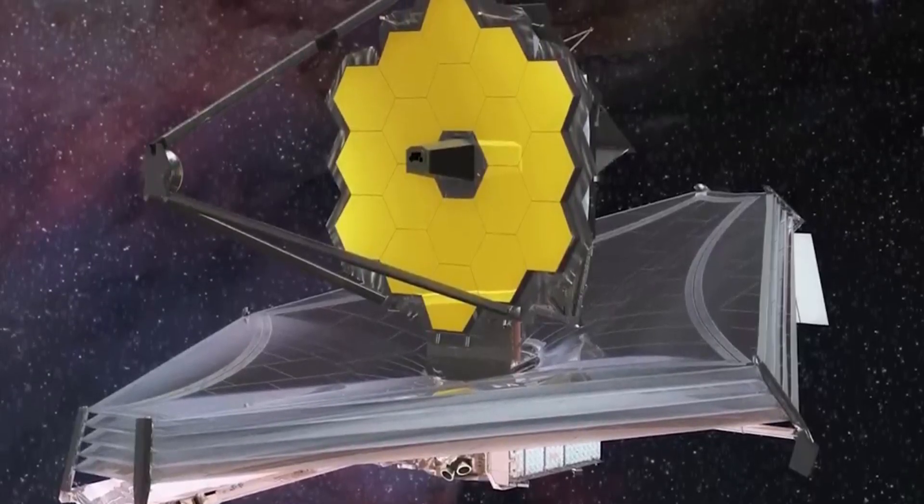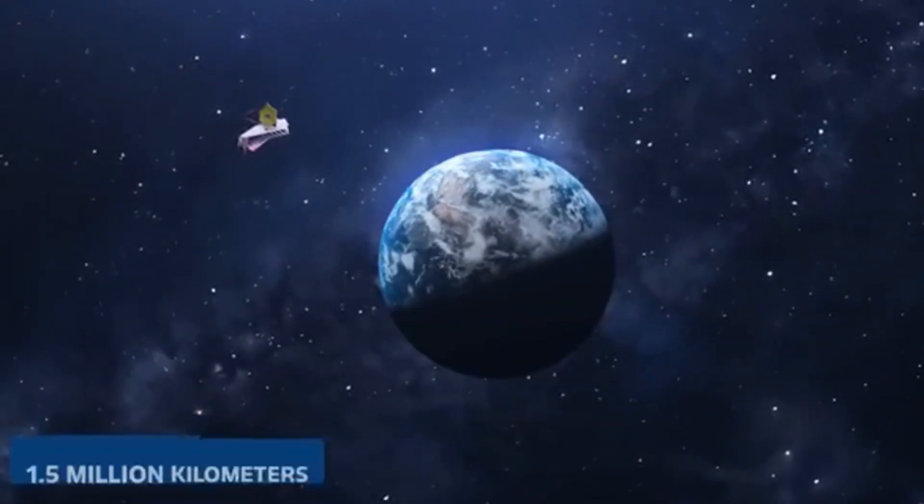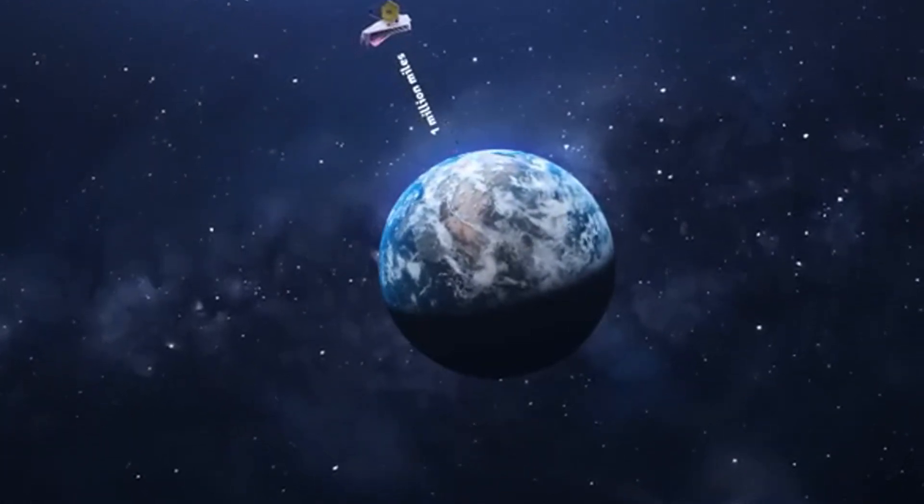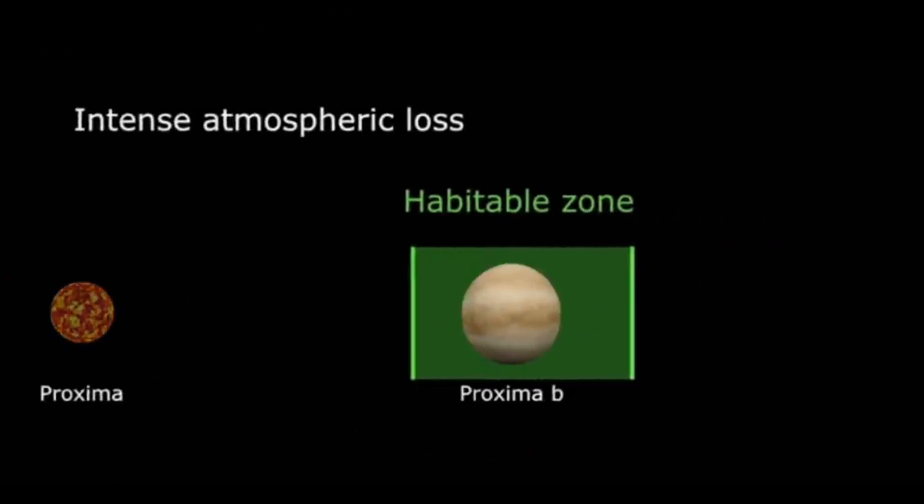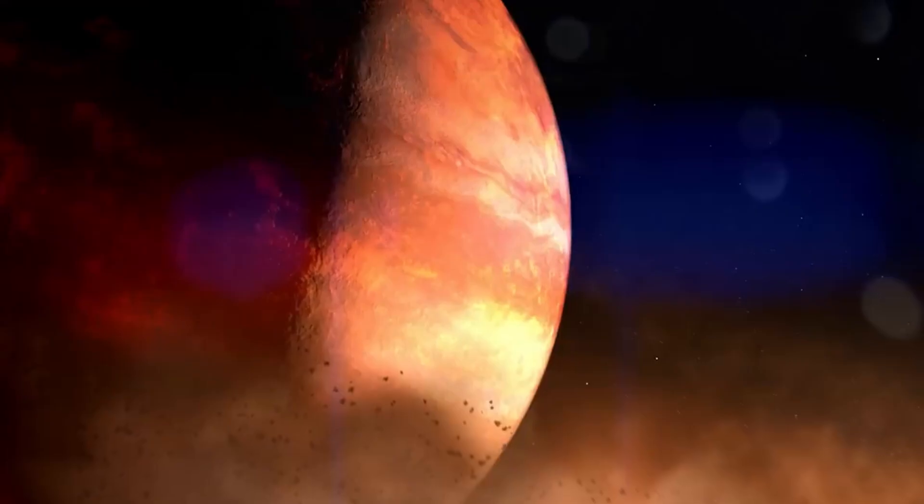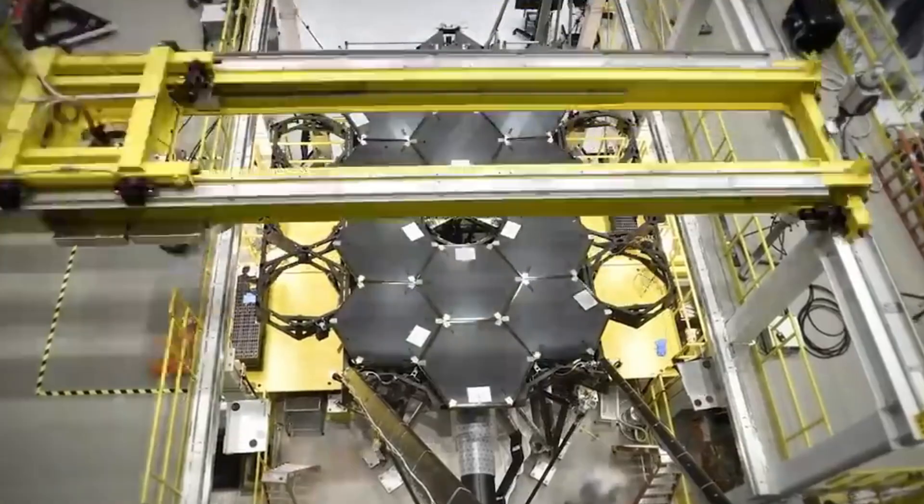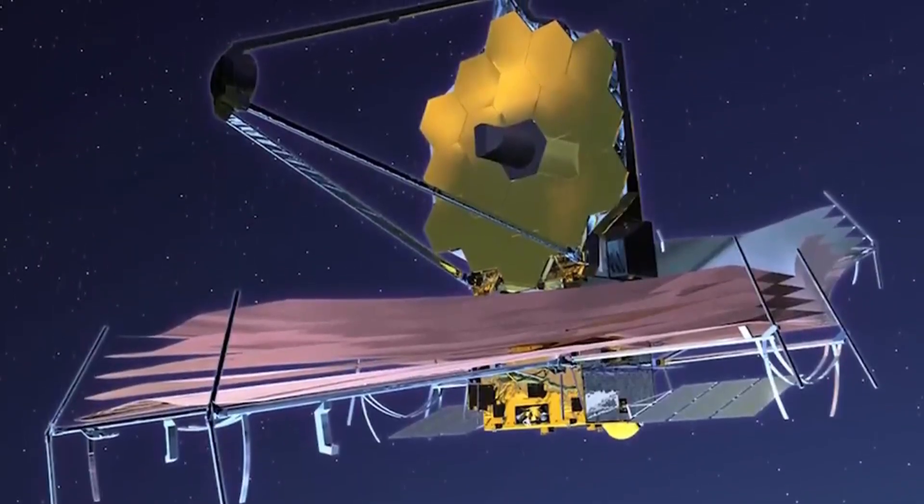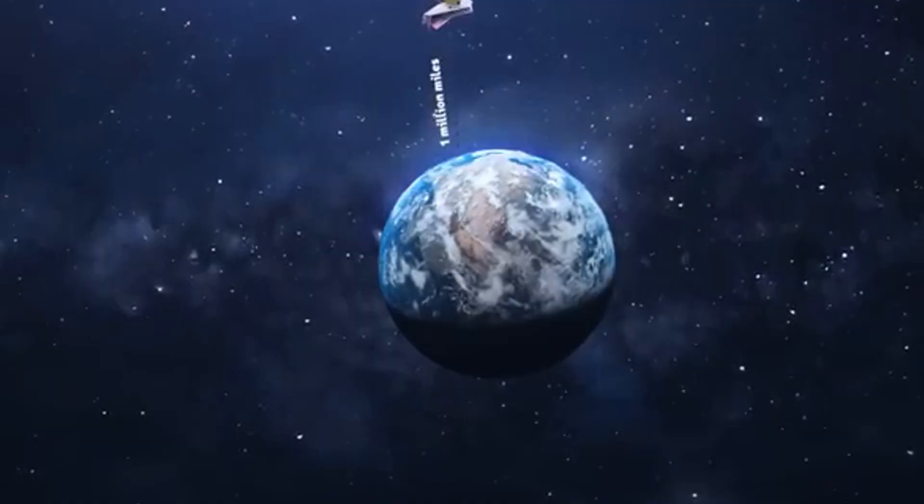The JWST thus represents a new era in space exploration, building upon the legacy of the Hubble while pushing the boundaries of our understanding of the cosmos. The JWST has given us unprecedented clarity in cosmology and the study of exoplanets like Proxima b. Proxima b's orbit around its parent star, Proxima Centauri, is a captivating aspect of its characteristics. Despite the relative proximity to the red dwarf star, this exoplanet exists within the habitable zone, a region where conditions might allow for the presence of liquid water.